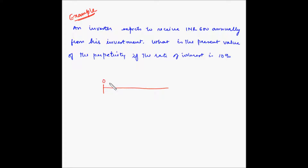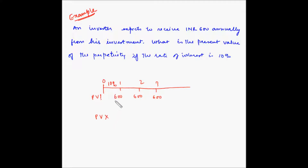Let's draw the timescale: 0, 1, 2, 3 and so on. The annuity expected is 600 rupees each year, the rate of interest is 10%, and we want to find out the present value — how much should be invested today. In case of perpetuity, the interest gained each year equals the payout. So PV equals A divided by I, which equals 600 divided by 0.1, which equals 6000 rupees. So 6000 rupees is the present value of this perpetuity.